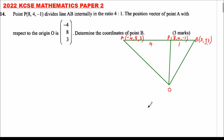The ratio theorem says that if we were to use OP, it is equal to M over M plus N of OB plus N divided by M plus N the vector OA. Where now our M is 1, our N is 4.